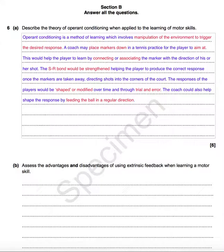The responses of the players would be shaped or modified over time and through trial and error. The coach could also help shape the response by feeding the ball in a regular direction — picture the coach standing there, feeding the ball onto the backhand of the tennis player. This wouldn't normally happen in a match, so that's another example of operant conditioning. This would not occur during normal practice or games with irregular directions of ball travel, so it's quite hard to use operant conditioning in a game situation because the coach can't shape or modify the environment — the balls come in at all different angles and speeds.